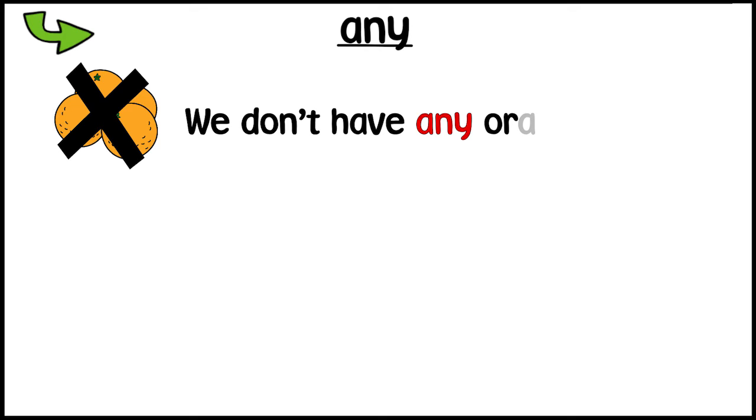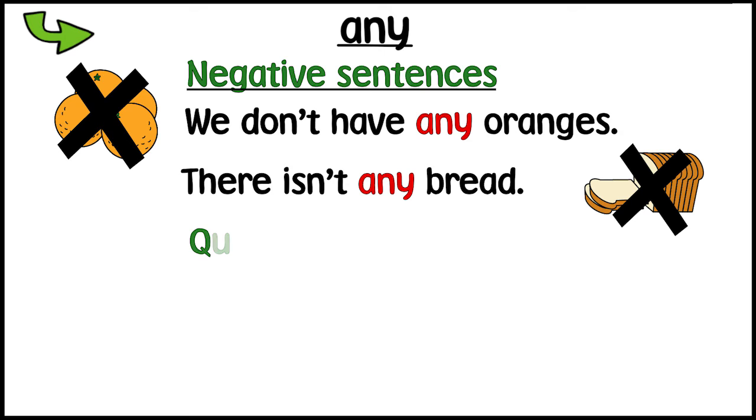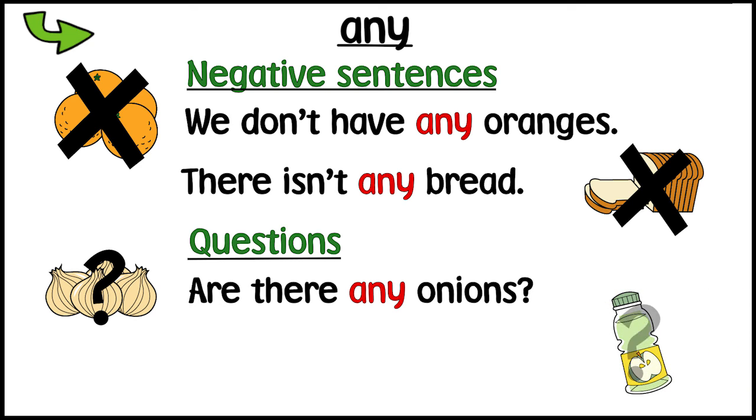We don't have any oranges. There isn't any bread. We use any with plural countable nouns and uncountable nouns in negative sentences and questions. Are there any onions? Do you have any juice?